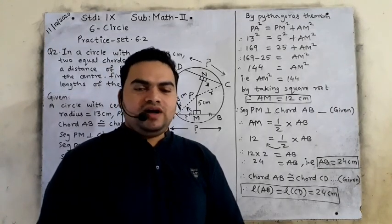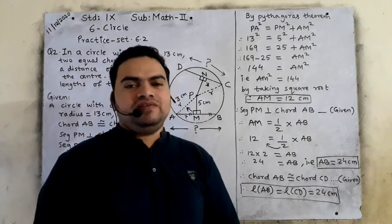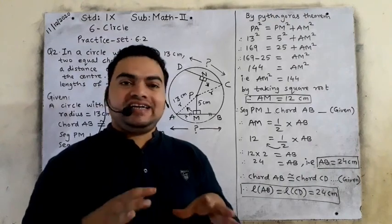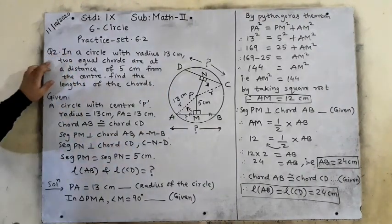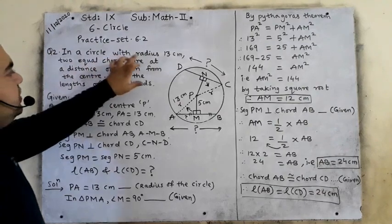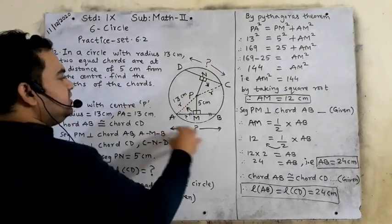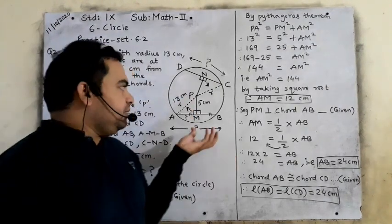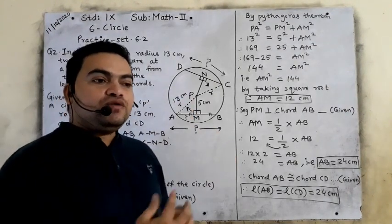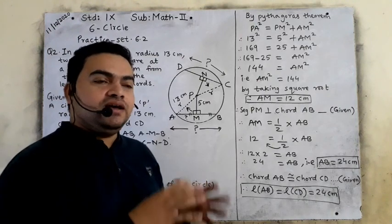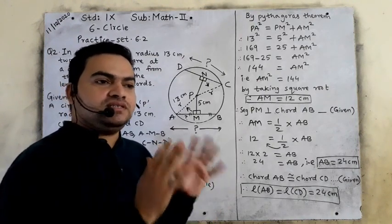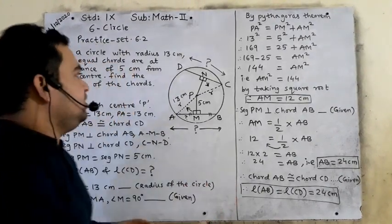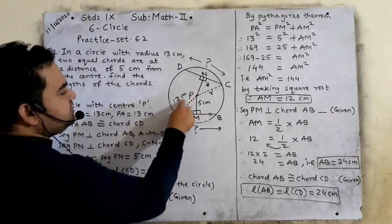Dear students, after question number 1, we will see question number 2. It is also similar. In a circle with radius 13 cm — I am keeping the same figure so we get accustomed to solving quickly using the same names, making it very easy to solve fast.